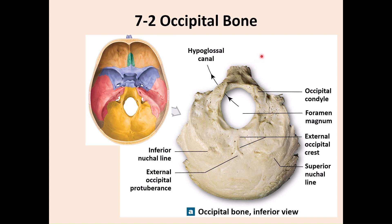So, occipital bone — this is the medial, or inner, view of the occipital bone, and this is the outer or external view of the occipital bone. You can see a few different structures. The most important one is called the foramen magnum, which is the area connecting the lower part of the brain with the spinal cord.